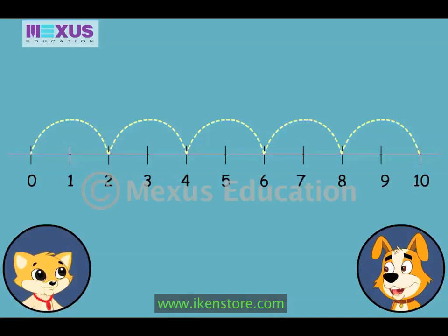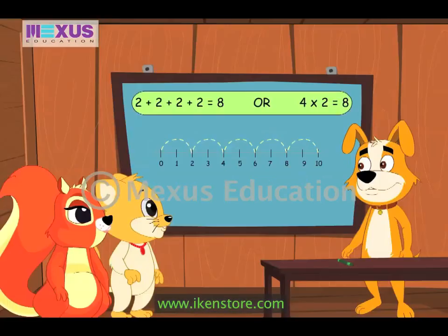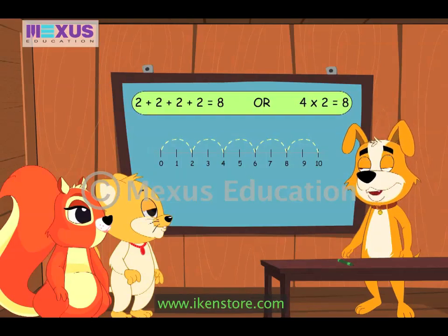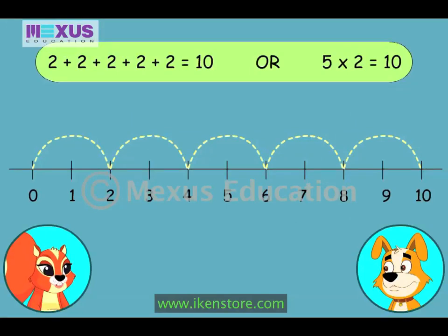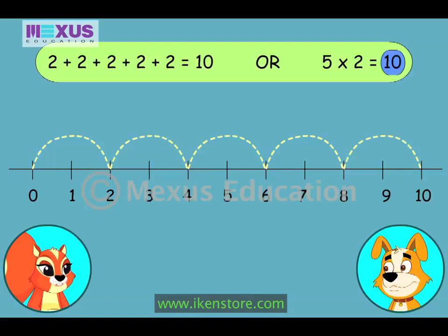Precious, can you give the answer? Well, I think 2 has been added to itself 4 times, so 4 times 2 is equal to 8. Are you quite sure? Yes, I am. No, Precious, that's not correct. Amber, it's your turn now. Well, it's very simple. 2 has been added to itself 5 times, so 5 times 2 is equal to 10. Well done, Amber. You are absolutely correct.